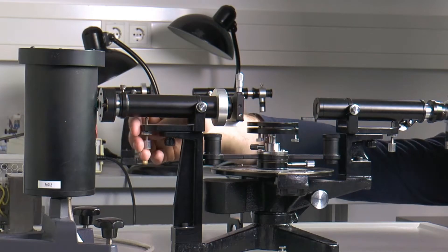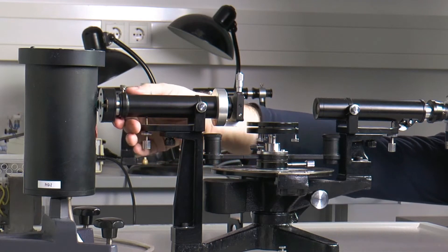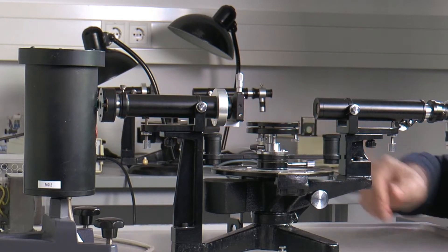The first step is to adjust the spectral apparatus. For this purpose, the slit tube and the telescope are aligned so that a sharp and centered image of the slit can be observed.